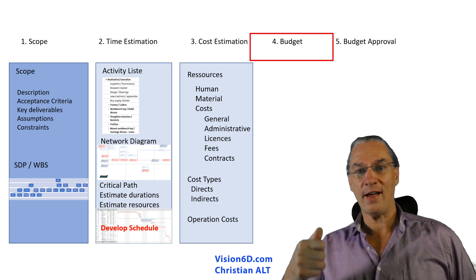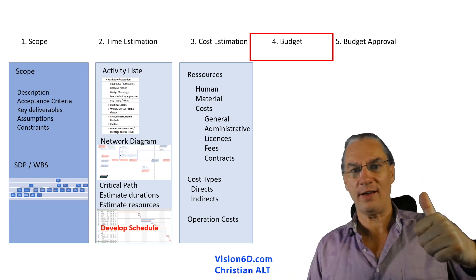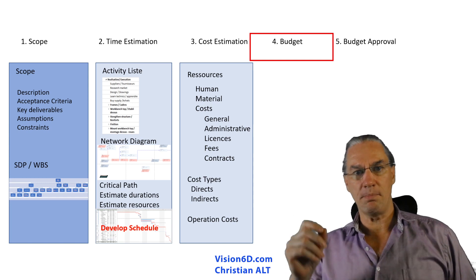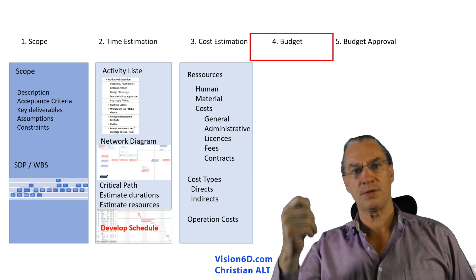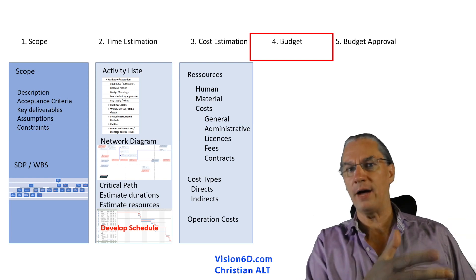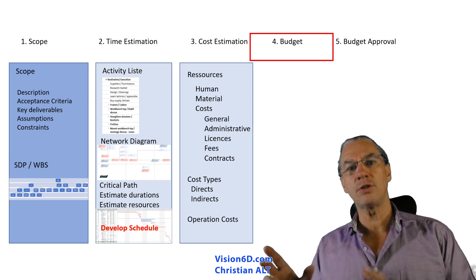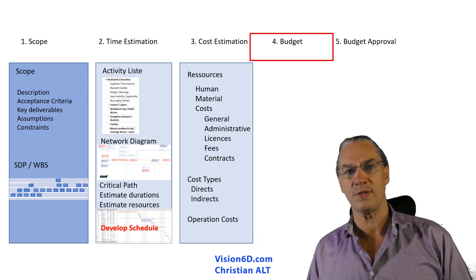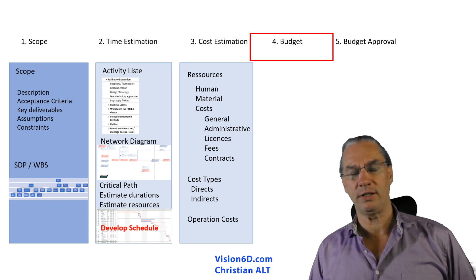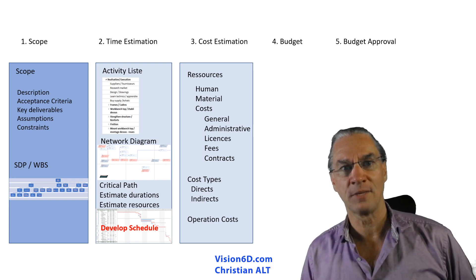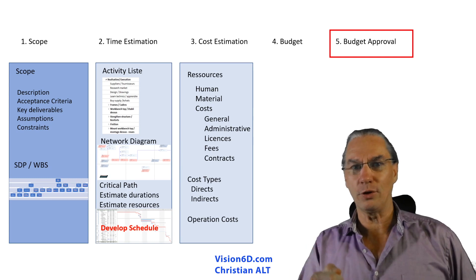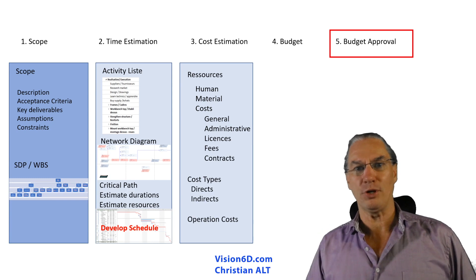Now we have the costs and we know how long the project will last. We have the cost and time estimation, so we can propose a budget. For some companies, a budget is purely monetary — just costs. For other organizations, they like to know the costs of what they need to buy, and since they use internal resources, they don't cost those directly but want to know how many hours, days, or months they will need them. So the budget is done — we propose it and it gets approved. Congratulations, you are a happy project manager and your project is running.